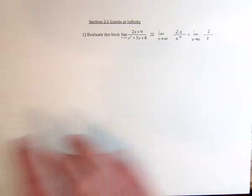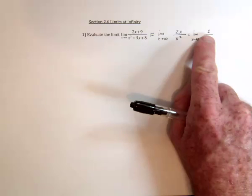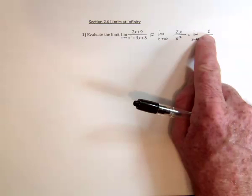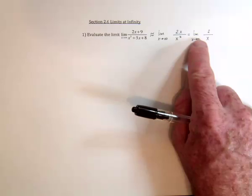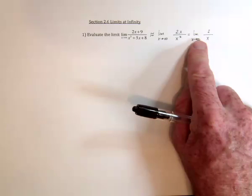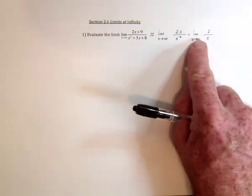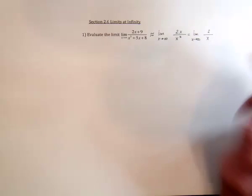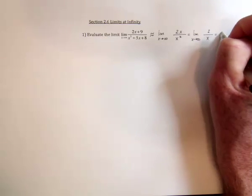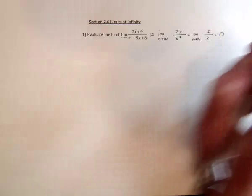You could think about it as: take $2 and divide it amongst an infinite number of friends. How much money does each friend get? Yeah, pretty much nothing. So this is going to be 0.